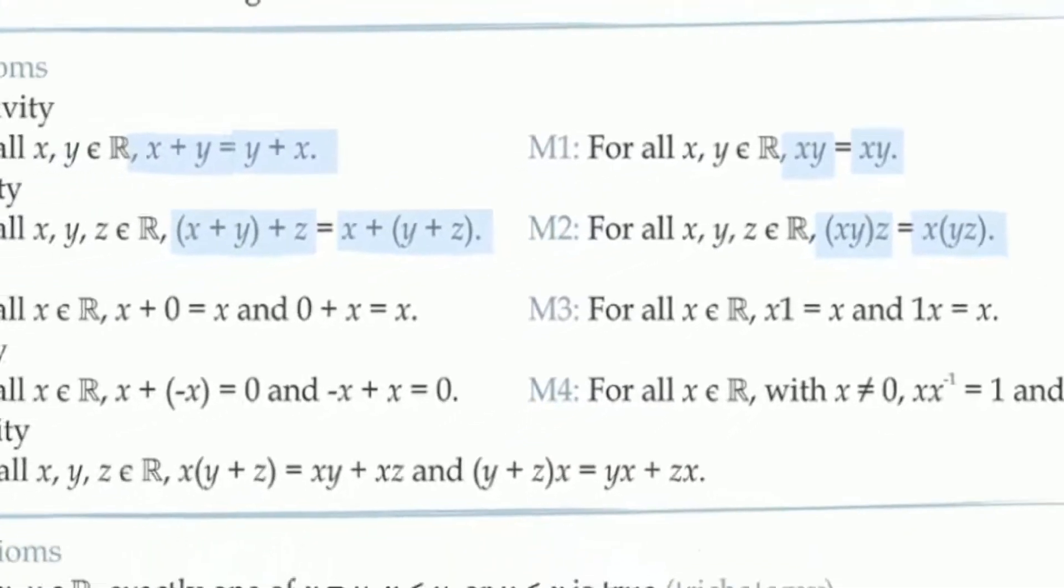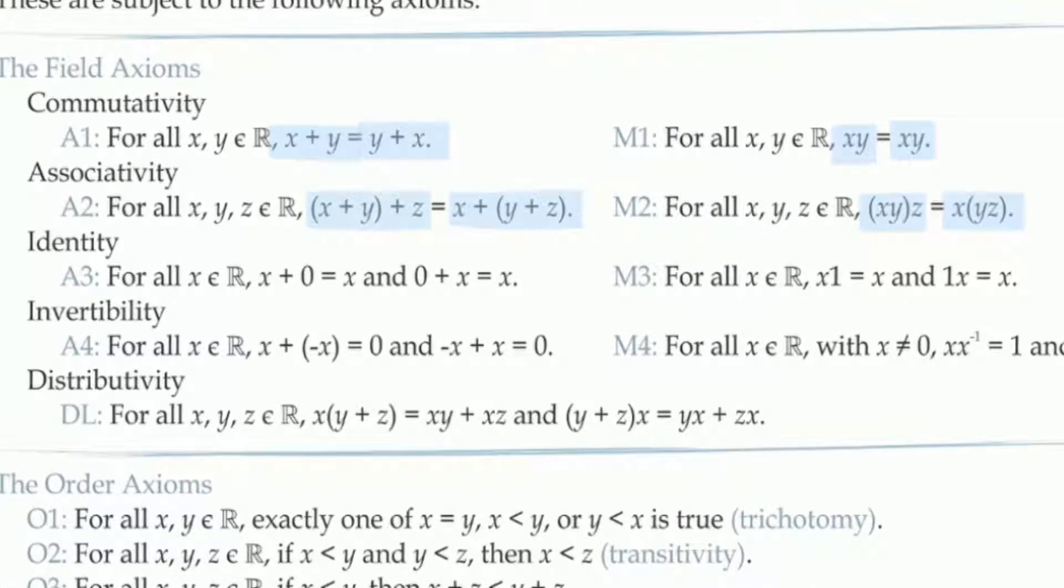The next pair, axioms A3 and M3, tell us the behavior of our two constants, 0 and 1.